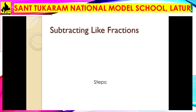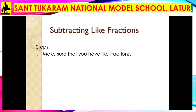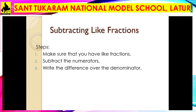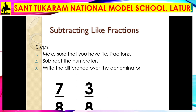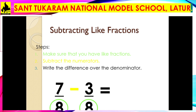For subtracting like fractions, follow the same steps. Step one: make sure you have like fractions. Step two: subtract the numerators. Step three: write the difference over the same denominator. Example: 7/8 − 3/8. Check — they are like fractions with denominator 8. Subtract the numerators: 7 − 3 = 4. Write the difference over the denominator: the answer is 4/8.